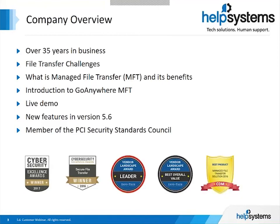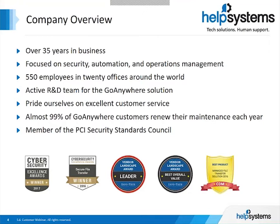Help Systems has been in business for over 35 years and focuses on developing security, automation, and operations management solutions. We have 550 employees and 20 offices around the world. Corporate headquarters is in Eden Prairie, Minnesota, but most of the R&D, support, and sales for our MFT solutions are right outside of Omaha, Nebraska. Our R&D team continuously improves products based on customer feedback, and we provide 24x7 support 365 days a year. Almost 99% of our customers stay on product maintenance, which we believe is a testament to the excellent service and value we provide.